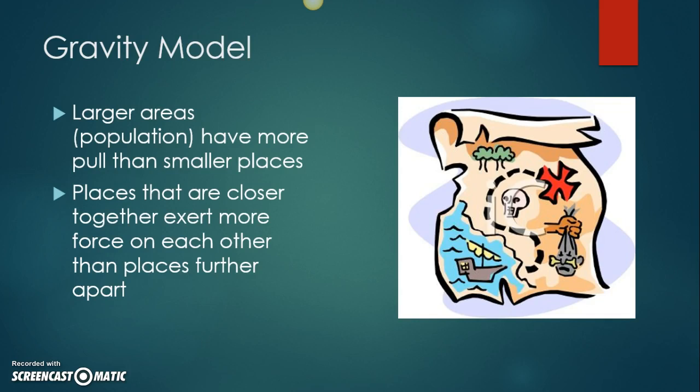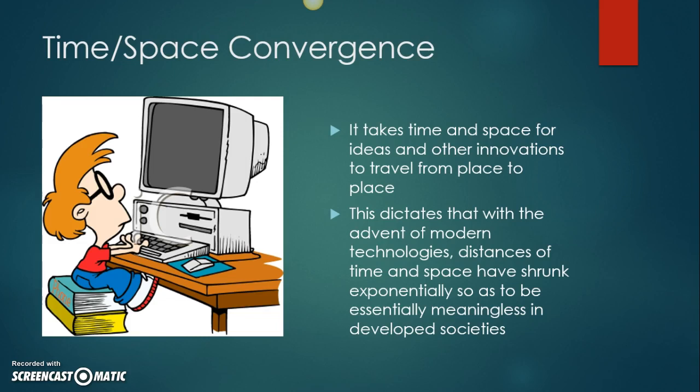The other theory of spatial interaction we're going to talk about is time-space convergence. In general, it takes time and space for ideas and innovations to move from place to place. But what time-space convergence dictates is that with the advent of modern technologies — things like cell phones and the internet — the distances in time and space have shrunk.